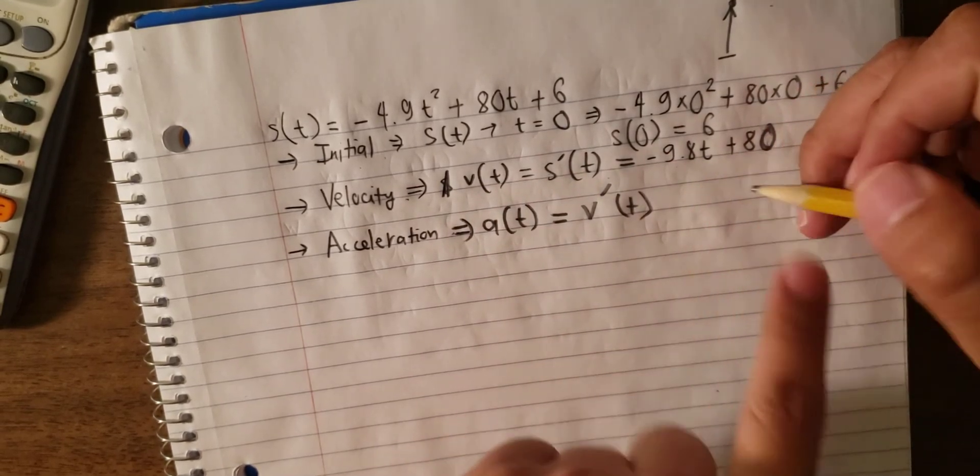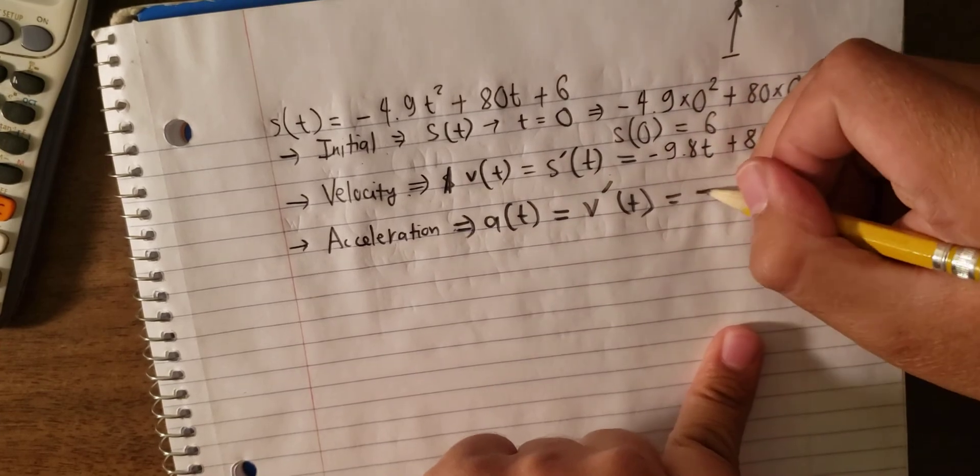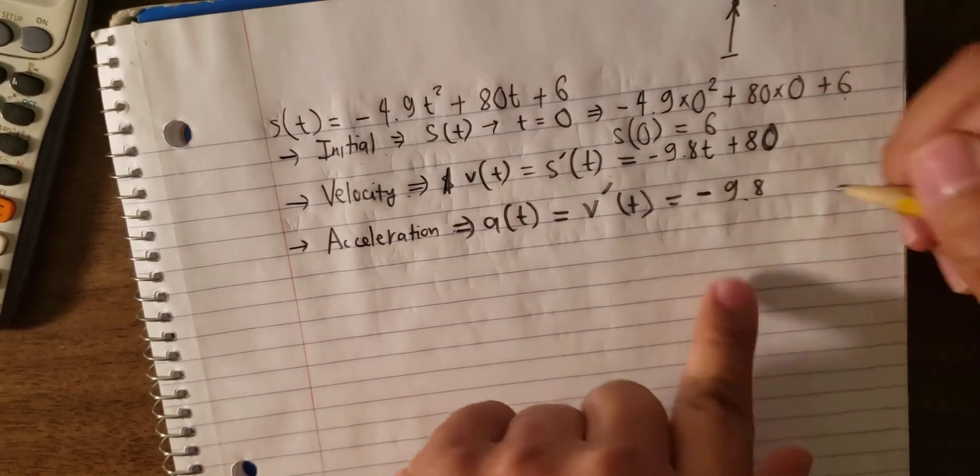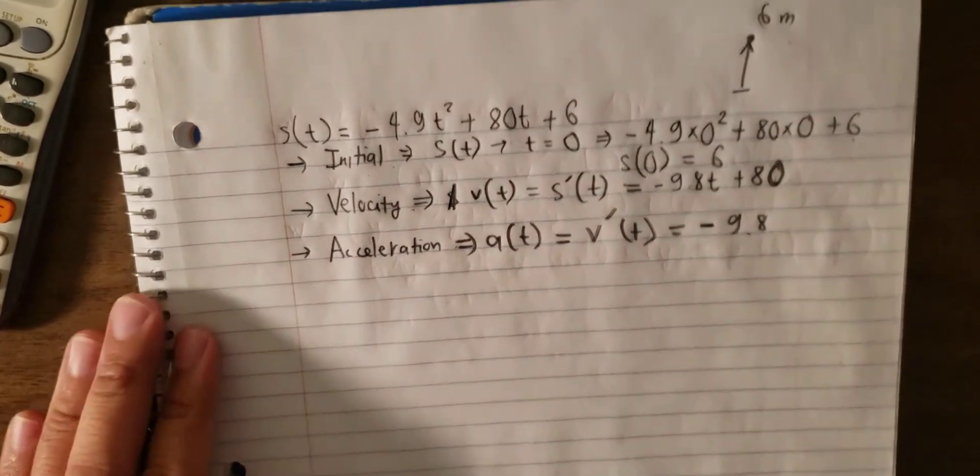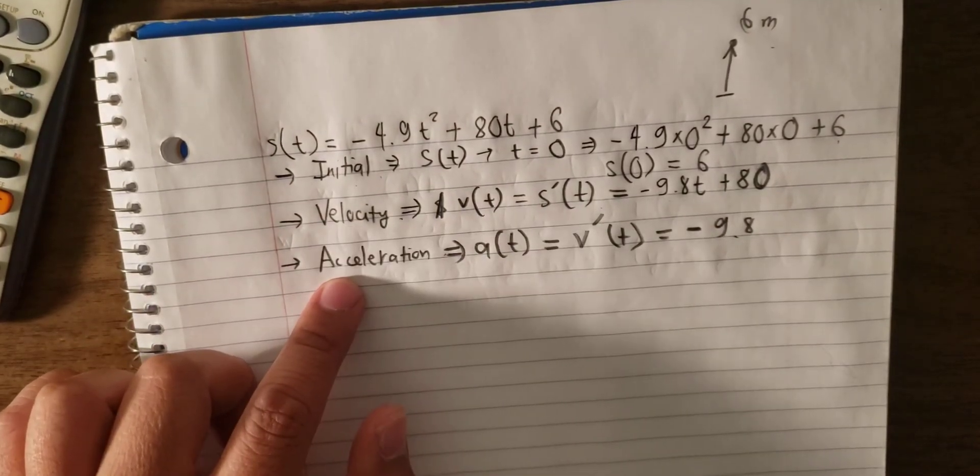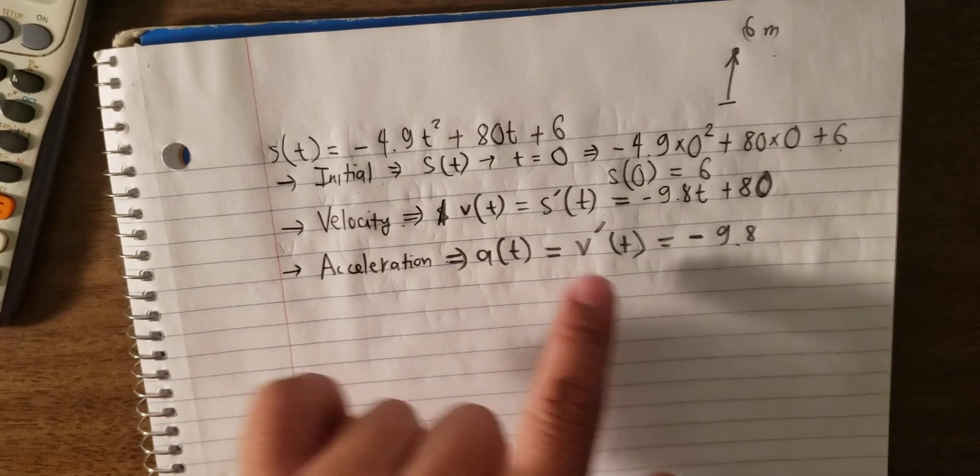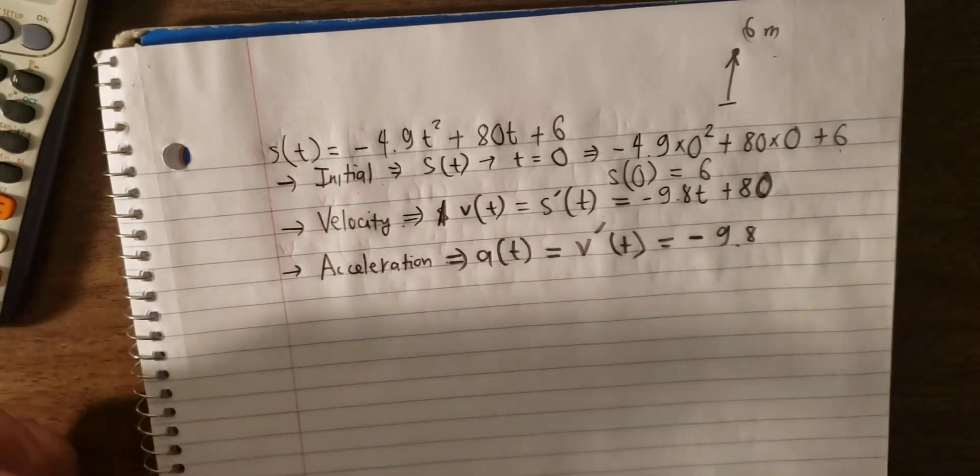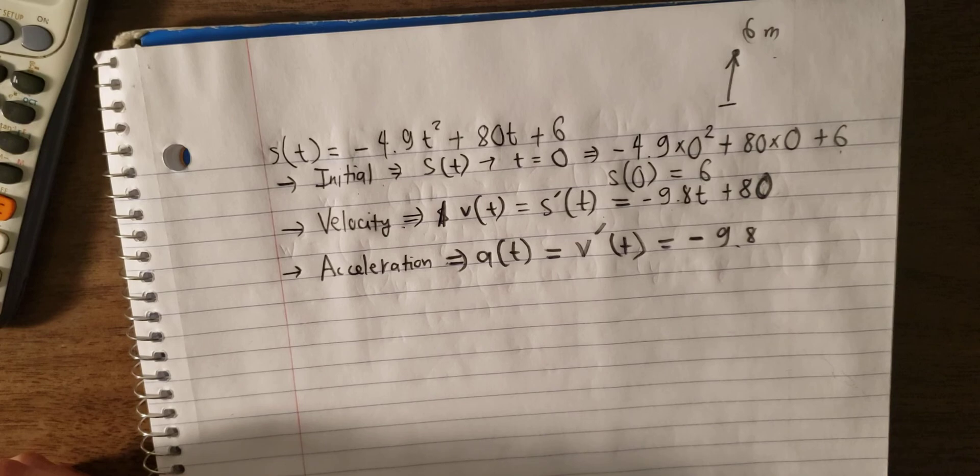We have v(t) is minus 9.8t plus 80, so acceleration is minus 9.8. This is the way we do velocity and acceleration. We just do the derivative of the function and we can find the solution. That's it, the end, thank you for watching.